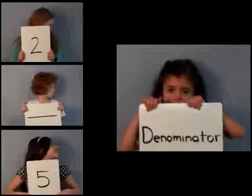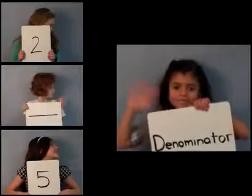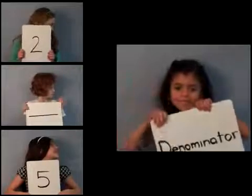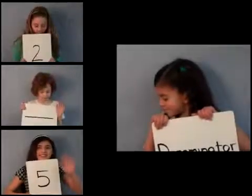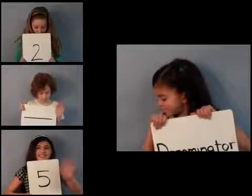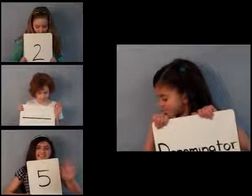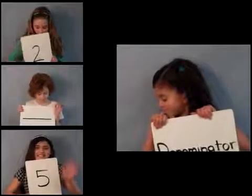It's the story of the denominator, which is the number on the bottom of the fraction. It's the total number of equal pieces in a set or in a whole.